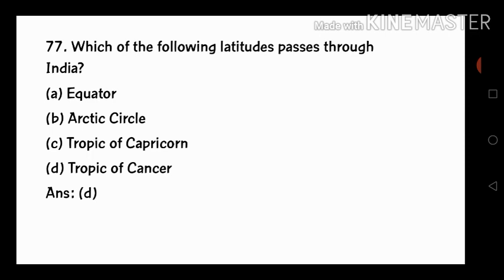Question number 77: which of the following latitudes passes through India? The options are the Equator, Arctic Circle, Tropic of Capricorn, and Tropic of Cancer. The answer is Tropic of Cancer. The Tropic of Cancer passes through 8 Indian states: 1. Gujarat, 2. Rajasthan, 3. Madhya Pradesh, 4. Chhattisgarh, 5. Jharkhand, 6. West Bengal, 7. Tripura, 8. Mizoram.